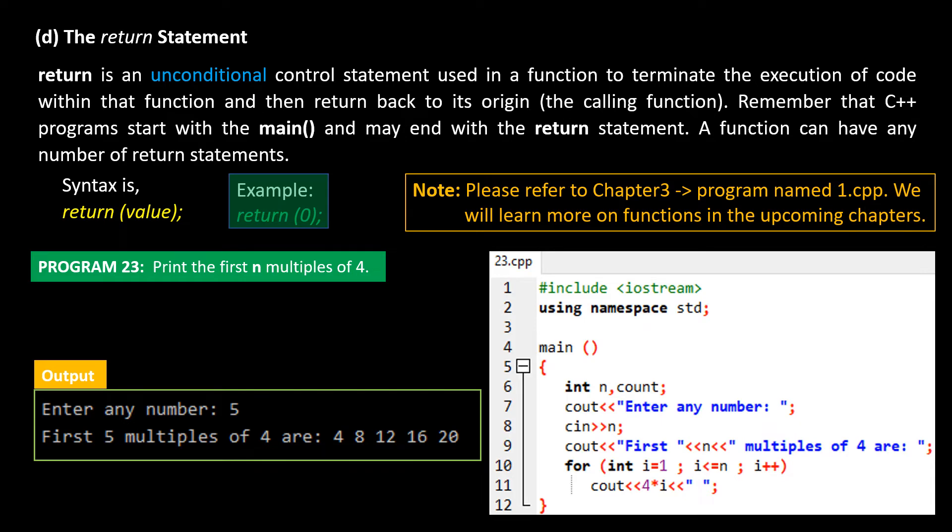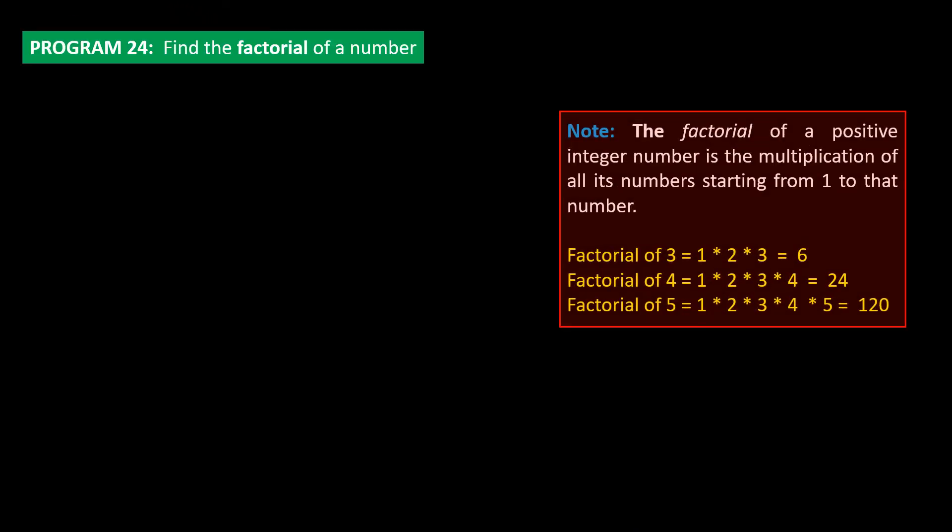Next is the program to print the factorial of a number. Note that the factorial of a positive integer number is the multiplication of all its numbers starting from 1 to that number. For example, factorial of 3 is 1 multiplied by 2 multiplied by 3 multiplied by 4, and that is 24. And factorial of 5 is 1 times 2 times 3 times 4 times 5, and the result is 120. Here is the program code, and this is the output.